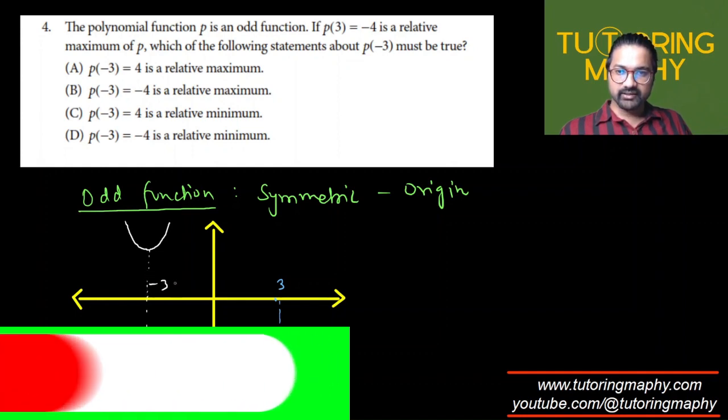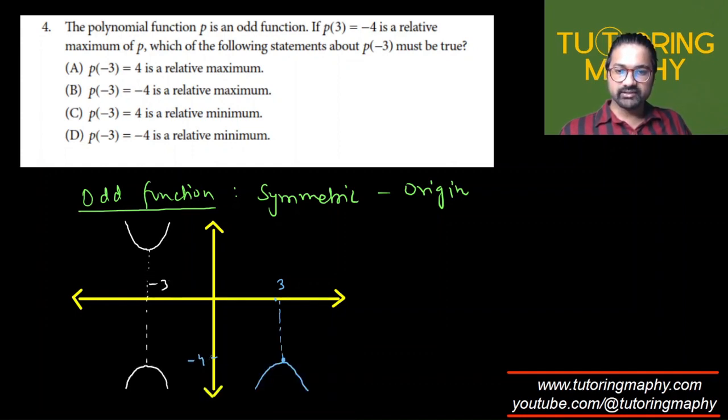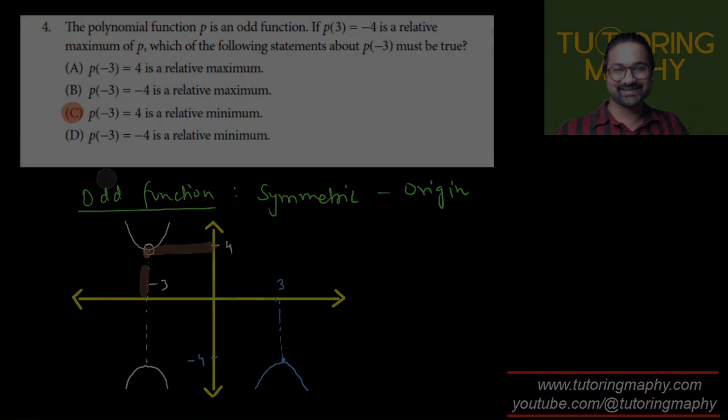Clearly this is -4, so flipping will make this as 4. So clearly, first off, this is a local minima—the maxima options are ruled out. It's a local minima. And we know that p(-3) is clearly 4. p(-3) = 4, which means that option C is the correct choice. This was also a little challenging, but I hope this one makes sense.